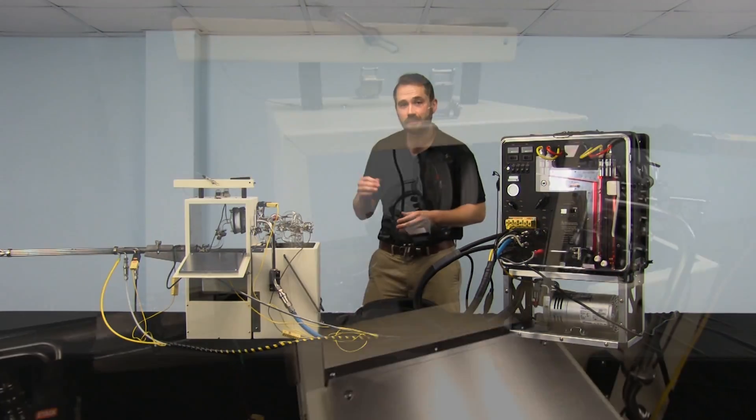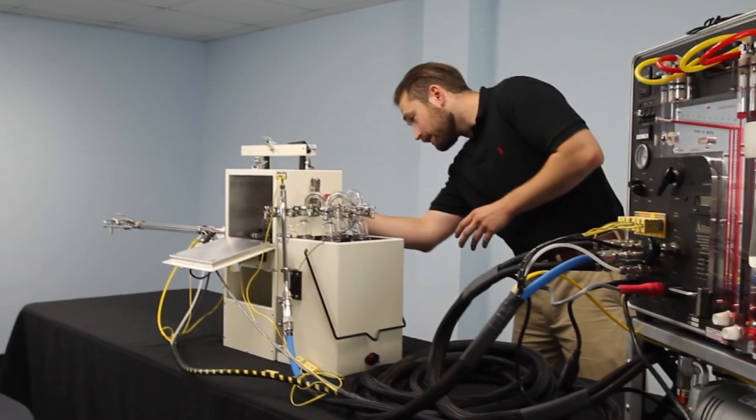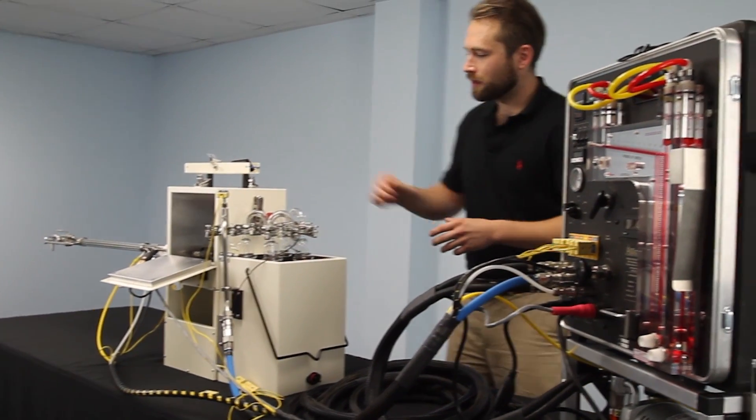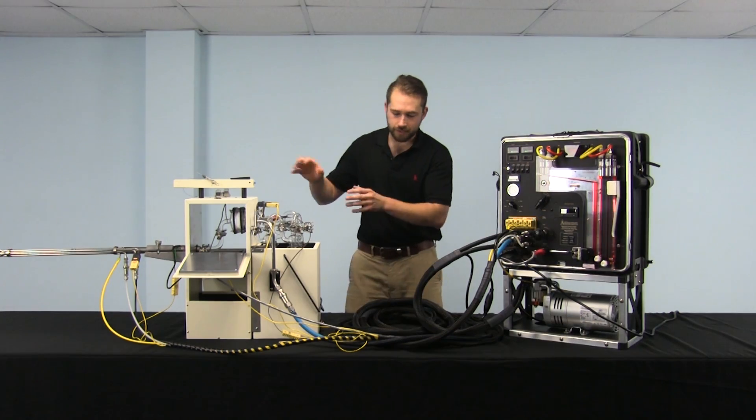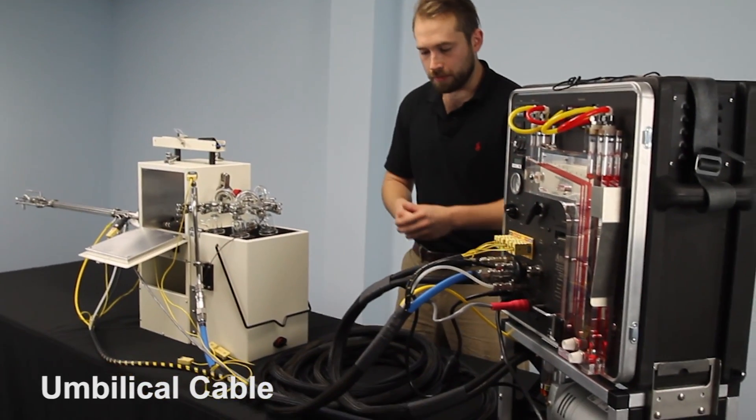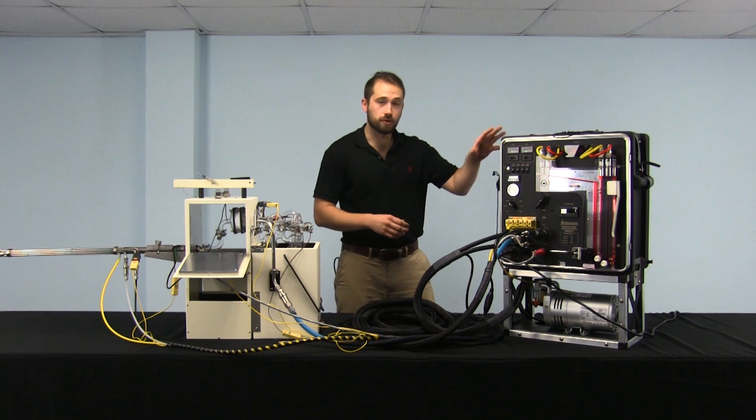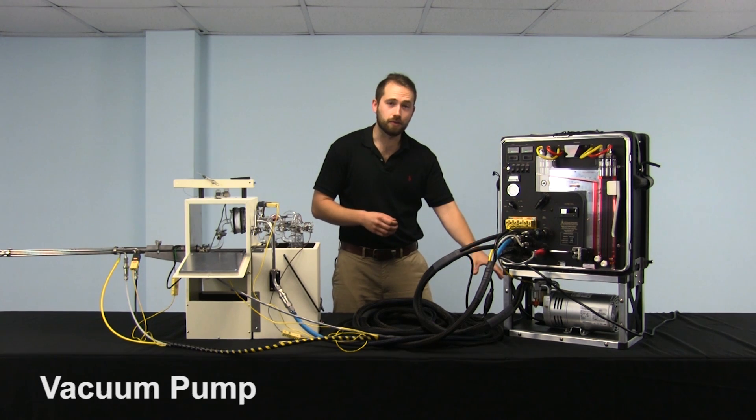We have the hot box where the particulate matter is stored right here in the filter assembly. Then we have the glassware otherwise known as the impingers. Then connecting all these components is the umbilical cable and finally we have the control console and the vacuum pump.